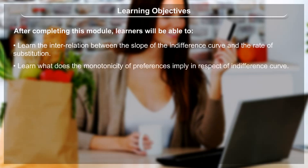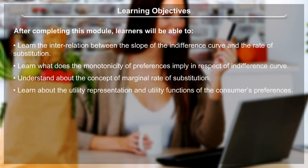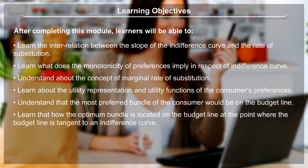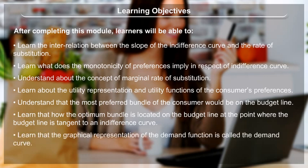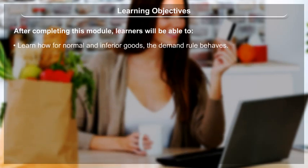Learn about monotonic preferences of the consumer. Learn about the rate of substitution and the diminishing rate of substitution. Learn the interrelation between the slope of the indifference curve and the rate of substitution. Learn what the monotonicity of preferences implies in respect of the indifference curve. Understand the concept of marginal rate of substitution, utility representation, and utility functions of the consumer's preferences.